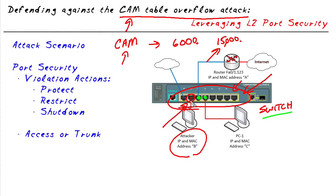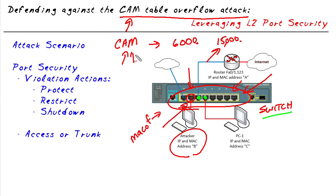This attack is carried out with tools like macof, which sends thousands and thousands of frames into the network with fictitious source MAC addresses, tricking the switch into learning thousands of MAC addresses on a single port and overflowing the capacity of the CAM table.